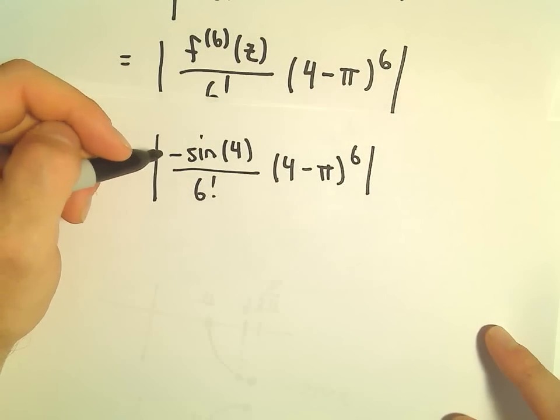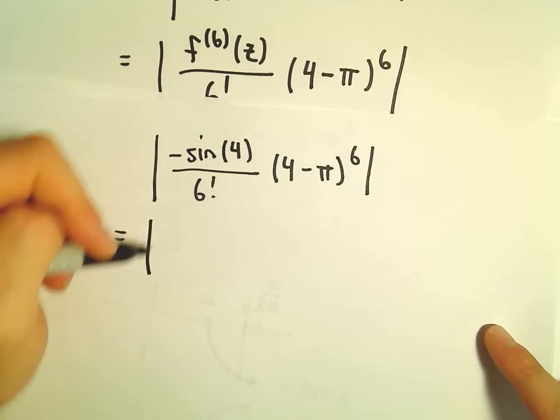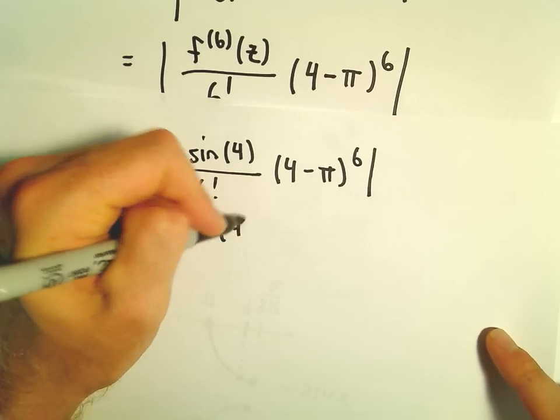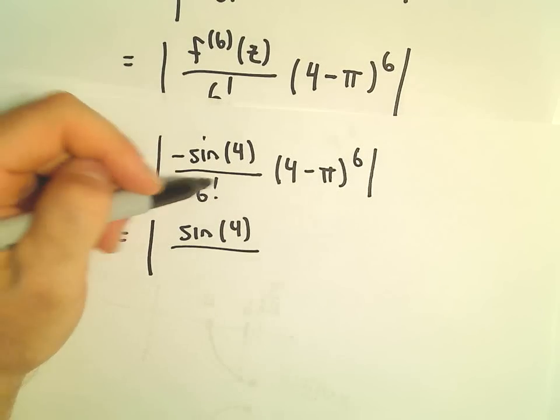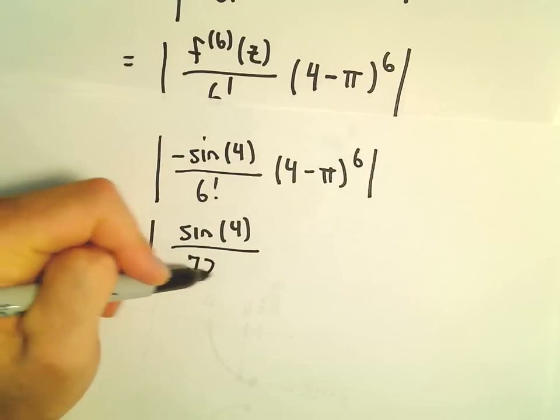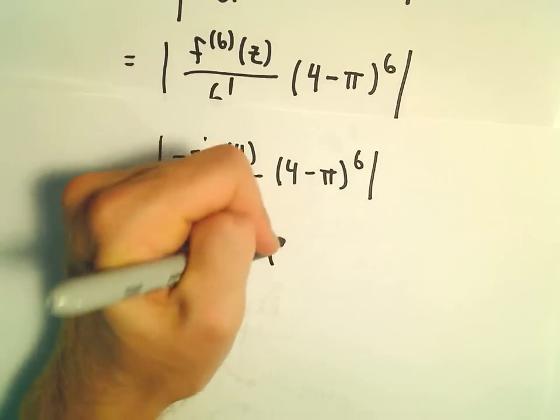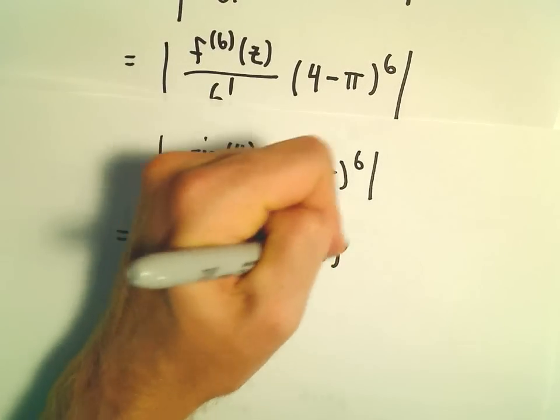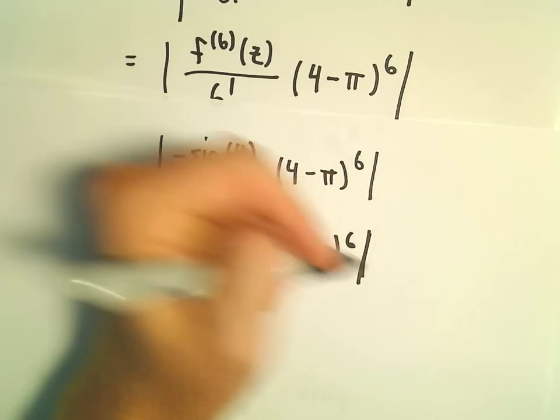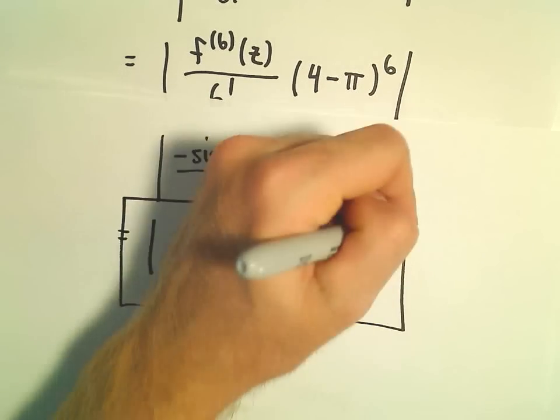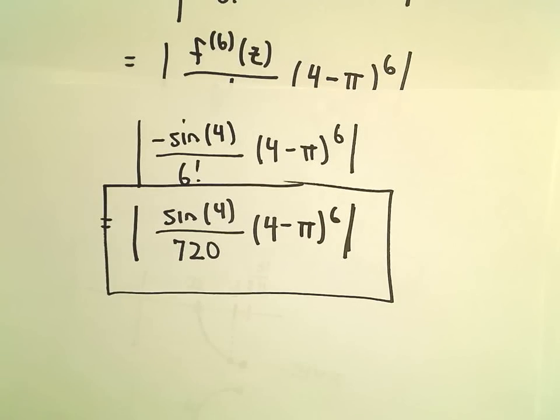When you take the absolute value, the negative is just going to go away. So we would be left with sine of 4. You can always evaluate 6 factorial, I believe that should be 720. Then we're left with 4 minus pi raised to the sixth power. So now we have an estimate for the error involved.